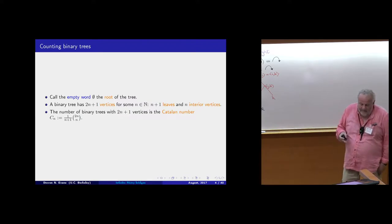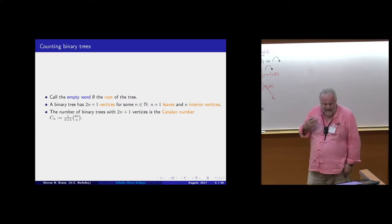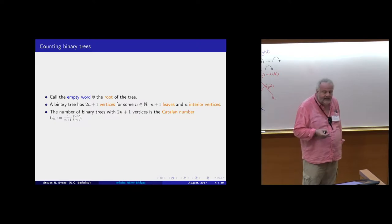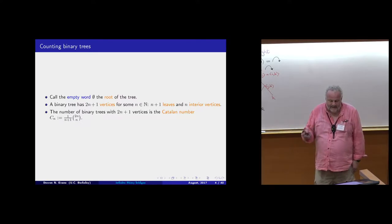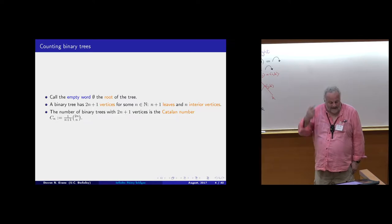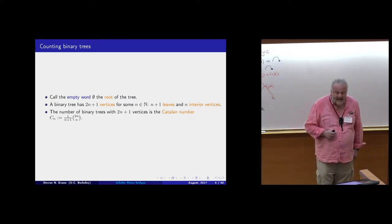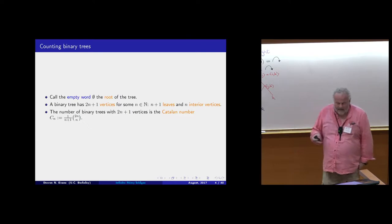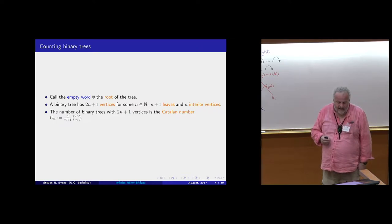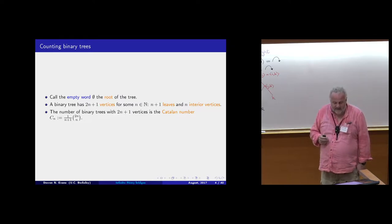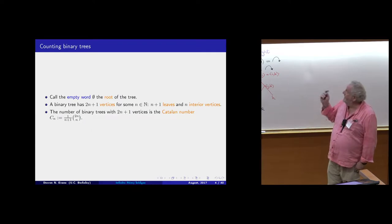The empty word is the root of the tree. A binary tree will always have 2n+1 vertices for some n; n+1 of those vertices will be leaves, n of them will be interior vertices. Although it won't be particularly important in anything I make explicit today, the number of binary trees with 2n+1 vertices is the nth Catalan number.